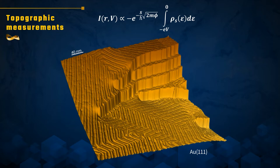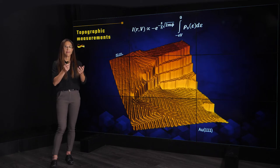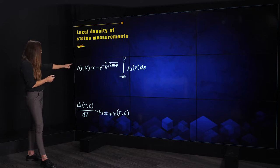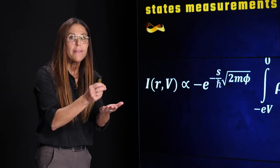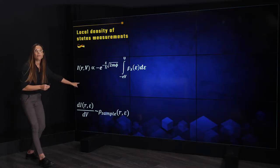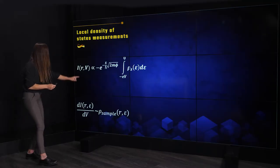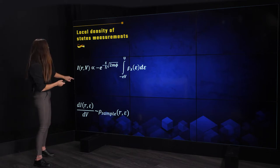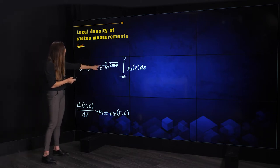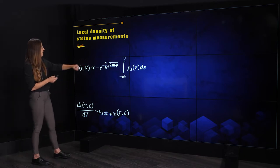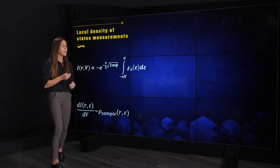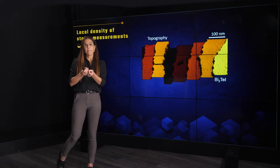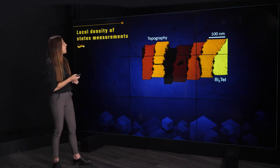Another type of measurement I'd like to discuss is measurement of the local density of states. Here we see the expression for the tunneling current. If we measure not the tunneling current but rather the derivative of the current with respect to the bias voltage, dI/dV, we can see that we measure something proportional to the local density of states of the sample. Taking the derivative of the tunneling current expression with respect to the bias voltage gives us a quantity proportional to the local density of states of the sample.